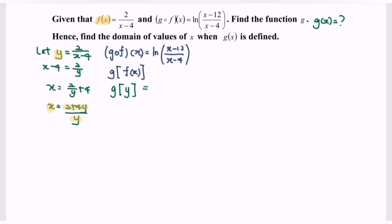Equals to ln of—substitute the x. So (2 plus 4y) over y minus 12, over y. Kindly focus on the elements in the bracket.